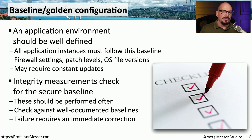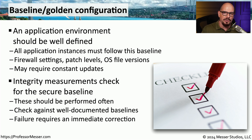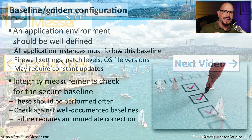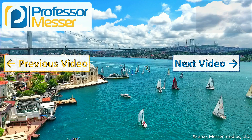If we find there are changes between those two environments, we can make changes either to the production environment to match the golden config, or we can update our baseline configuration so that it matches the new production configuration. Once we make those changes, we have a new version of our baseline configuration that we can use as our integrity check going forward.